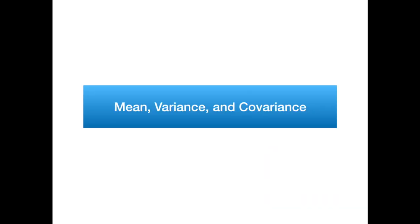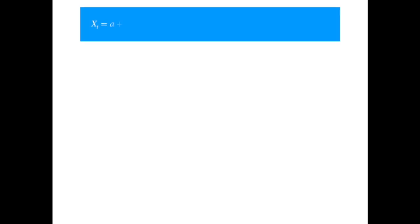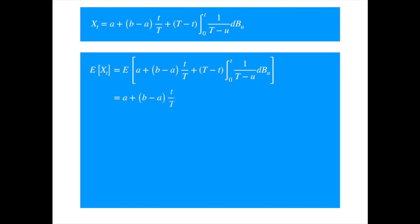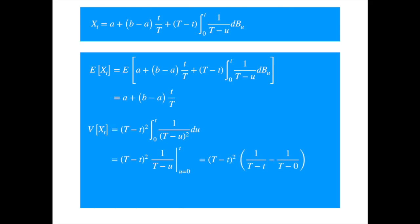Now let's calculate the mean, variance, and covariance of the process. Let's reproduce the solution first. Taking expectation of both sides — note the expectation is conditional on the information available at the starting point — and recalling that the expected value of the integral of a deterministic function with respect to Brownian is 0, we get the mean formula. Recall from the previous videos that the variance is just an application of Ito's isometry. We evaluate the integral and plugging in the limits, combining the two terms and simplifying, we get the formula for the variance.